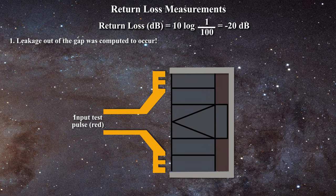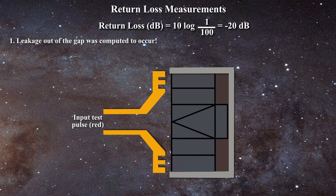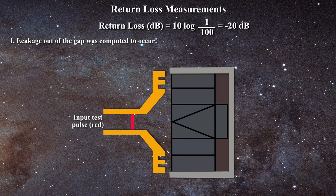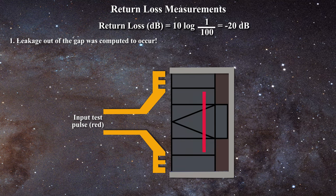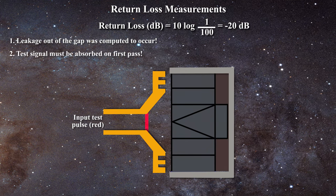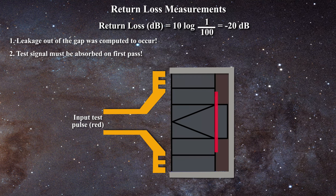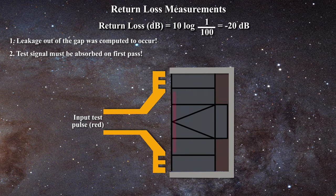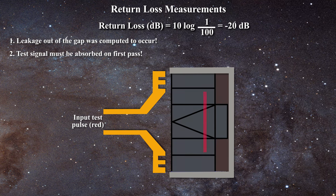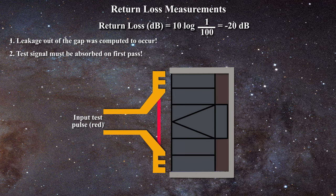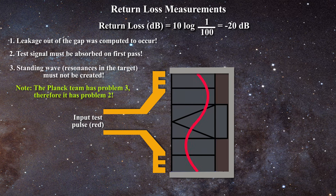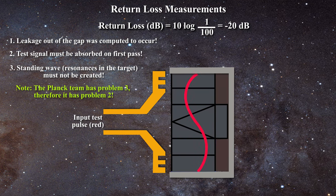Beyond spillover, there are other possible problems with the return loss measurements. For instance, if an incident signal penetrates the target, it must be absorbed on first pass. It should not traverse the Echosorb, become reflected at the casing, and then be absorbed as it tries to exit the target. That would result in a return loss value which is lower than actually warranted by the nature of the absorber, making the target appear more black than it really is. The Planck team cannot account for this problem. In addition, when a signal is directed towards a metallic target, standing waves might be created if the dimensions of the cavity are the proper size. This is exactly what is observed in the Planck test data.